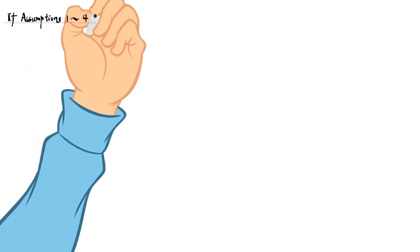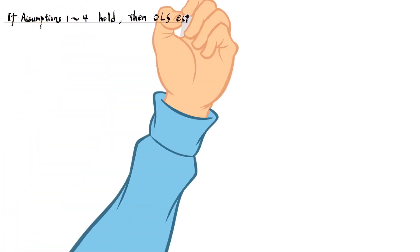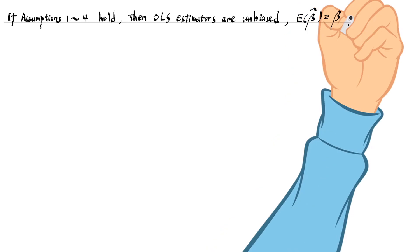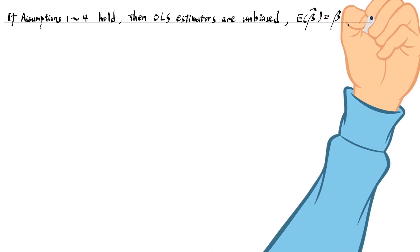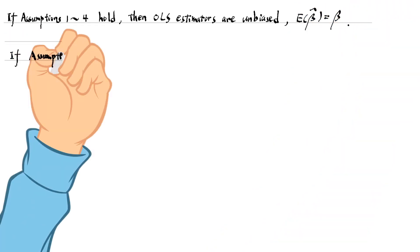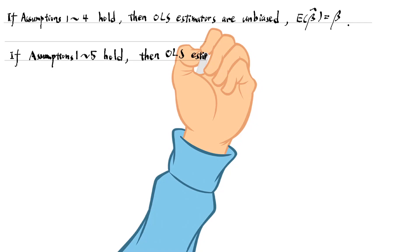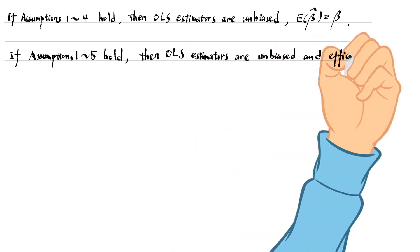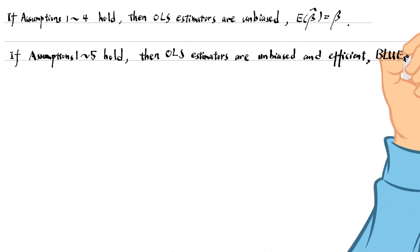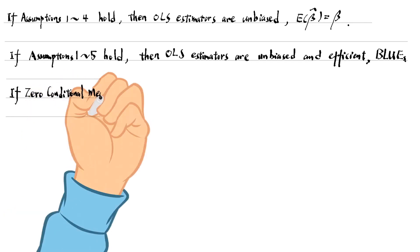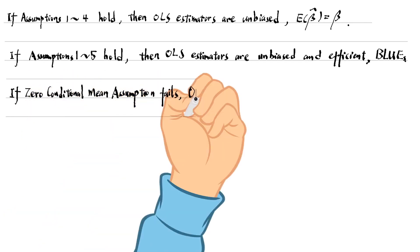In summary, if assumptions one to four hold, then the OLS estimators are unbiased. If assumptions one to five hold, then the OLS estimators are unbiased and efficient. In other words, they are the best linear unbiased estimators — BLUE.